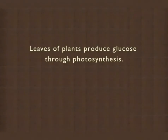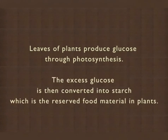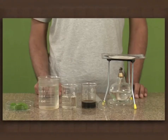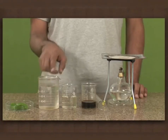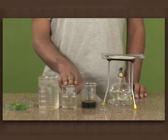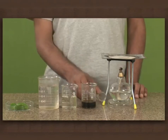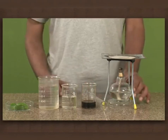Do you know that leaves of plants produce glucose through photosynthesis? The excess glucose is then converted into starch, which is the reserved food material in plants. Let us do a small experiment to test the presence of starch in leaves. We need a leaf, boiling water, alcohol, iodine solution, test tube, and spirit lamp.